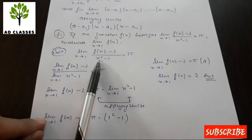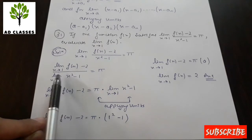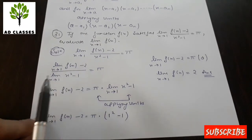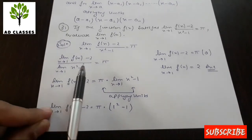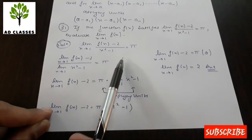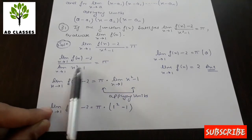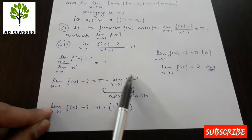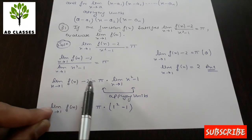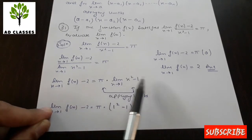We separate the limit: limit of [f(x) - 2] divided by limit of [x² - 1] as x tends to 1 equals π. Cross-multiplying, we get: limit as x tends to 1 of [f(x) - 2] = π multiplied by limit as x tends to 1 of (x² - 1).